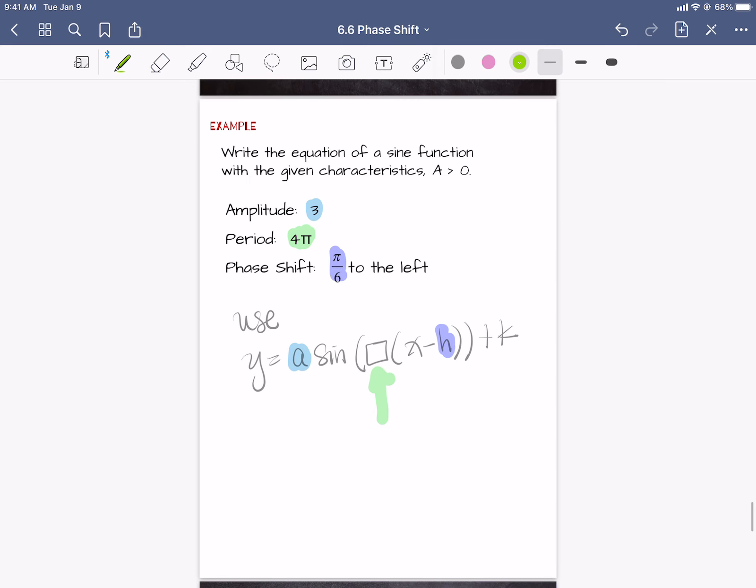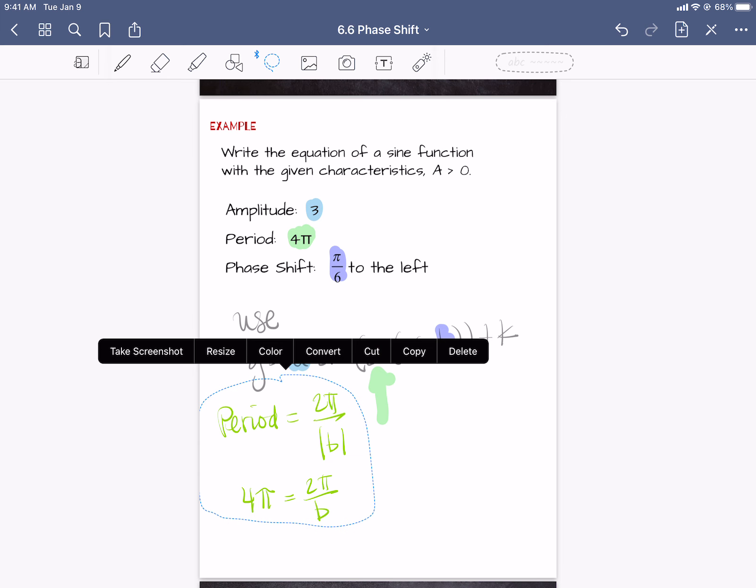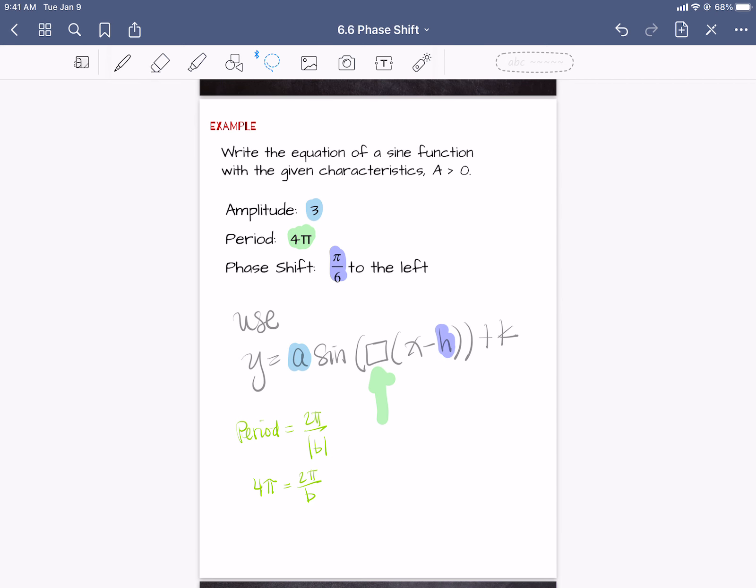And my period is going to come from this guy. He's really all I have to figure out. So if the period is found by using 2π divided by the absolute value of b, then all we need to do is substitute in the fact that the period is 4π for this guy and solve for b. We'll just call it b instead of the absolute value. So solving this guy, multiply both sides by b, divide both sides by 4π, and we get b is equal to a half.